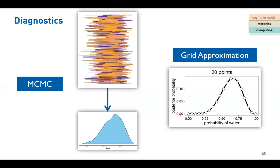You might wonder why these shapes are not identical, since they represent the same thing. It is because the MCMC algorithm is a sampling approach, and sampling is not always as smooth as the grid approximation. If we want a smoother shape, we could increase the number of samples - instead of 2,000 per chain, we could run 10,000 per chain, and run eight chains, giving us 80,000 samples, making the shape quite smooth.